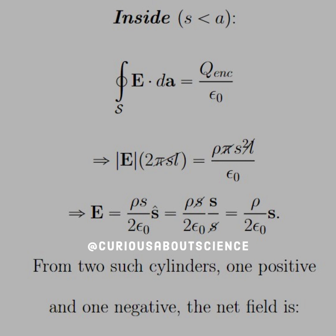To find the electric field inside, we simply use Gauss's law, where we have the surface integral and the Q enclosed over epsilon naught. Since this is a cylinder, the surface area is 2π s times L, and the Q enclosed is rho times the volume of a cylinder, which is π s² times L. We get nice cancellations, and we end up with the electric field equals rho s over 2 epsilon naught in the s-hat direction.